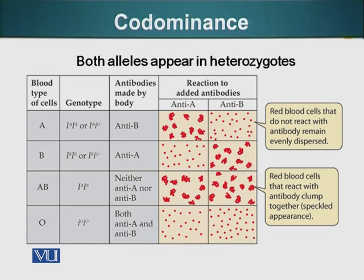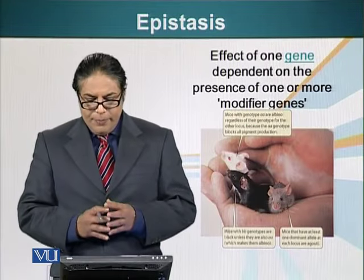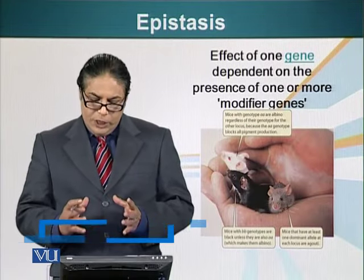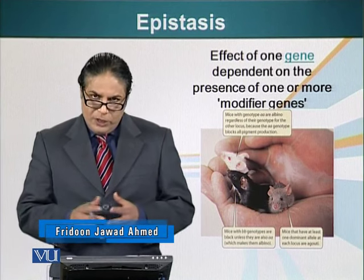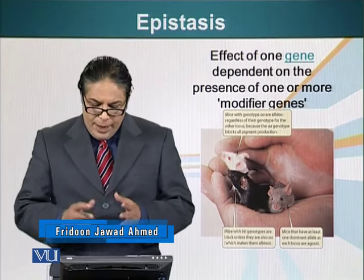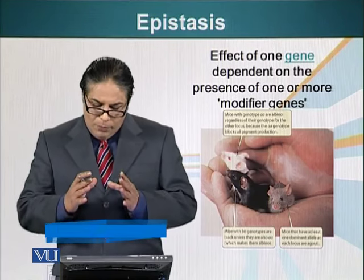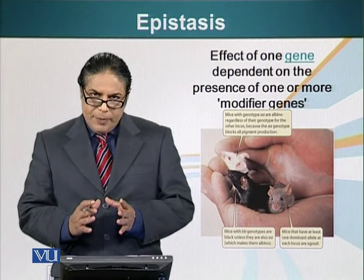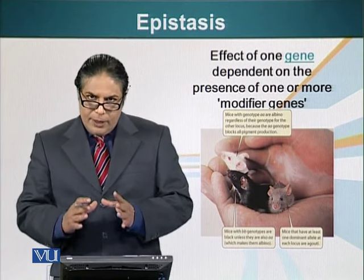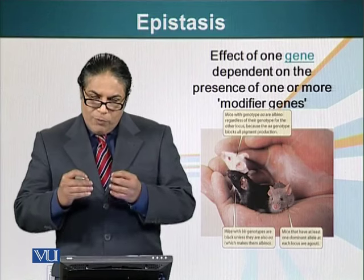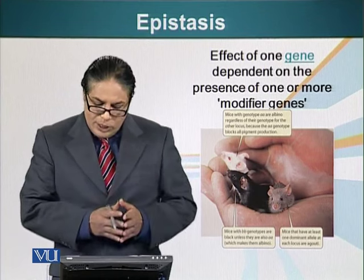Next, let me introduce you to another concept: epistasis. It is a phenomenon in which the effect of one gene is dependent on the presence of one or more modifier genes. For example, in mice, the brown coat color is dominant over black coat color. However, the ability of mice to produce color on their coat is dependent on another gene.